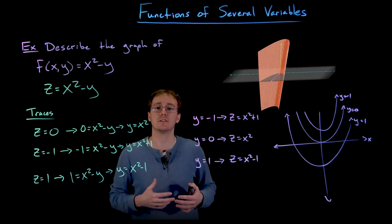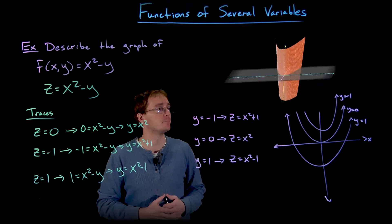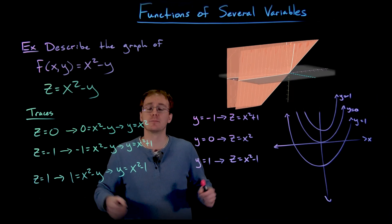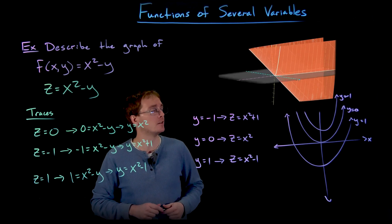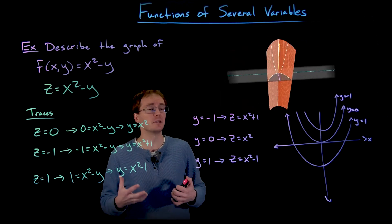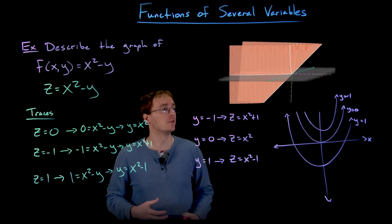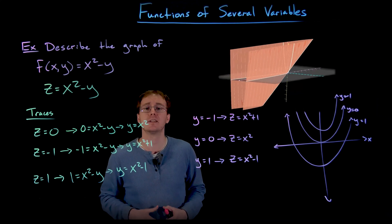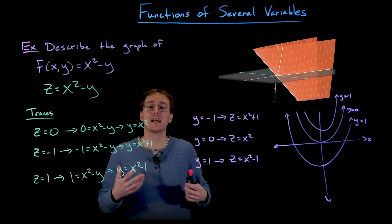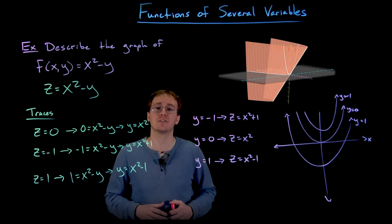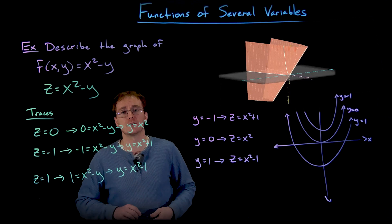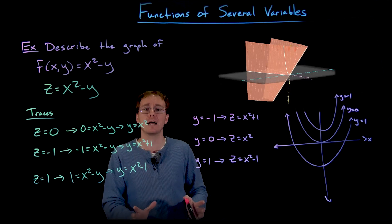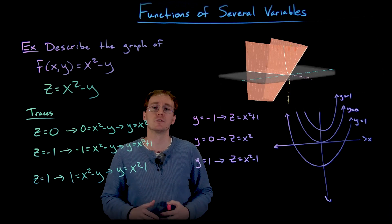Let's look at the graph of this function in GeoGebra and see where all these level curves and traces come into play. We can set z, y, or x equal to zero and see where those planes intersect our three-dimensional surface. Stacking all these traces together creates a wire skeleton for our three-dimensional surface. When we look at the full surface, it looks like a parabolic slide — technically a parabolic cylinder, where the lines of symmetry run along z equals negative y, formed by a family of shifted parabolas.